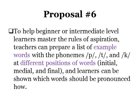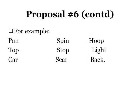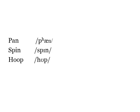To help beginner or intermediate level students master the rules of aspiration, teachers can prepare a list of example words with the phonemes p, t, and k at different positions, and show students which words should be pronounced how. For example, students can be shown that the word 'pen' should be pronounced as 'pen' (aspirated), 'spin' as 'spin' (unaspirated), and 'hook' as 'hook'. This means the stop consonant should be aspirated only when it appears at the beginning of a syllable.